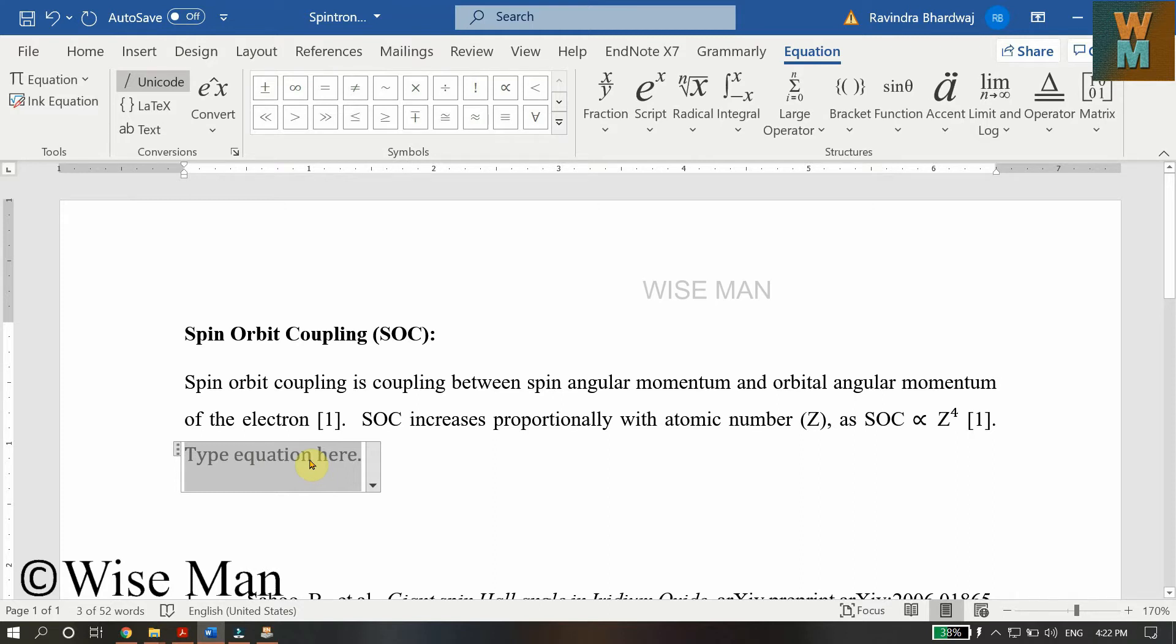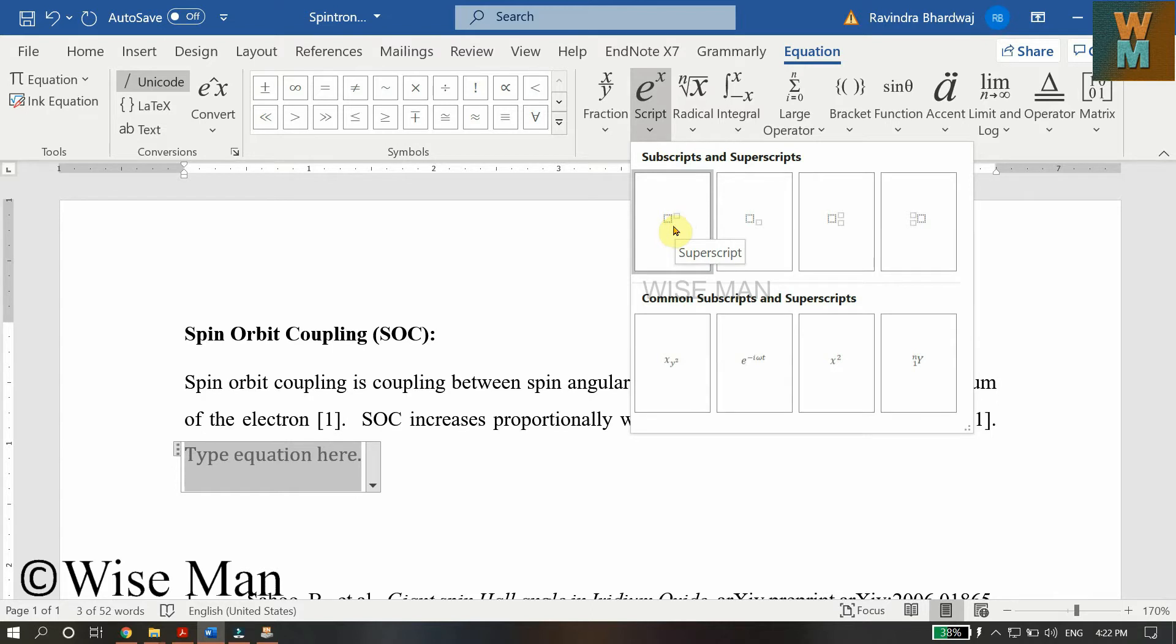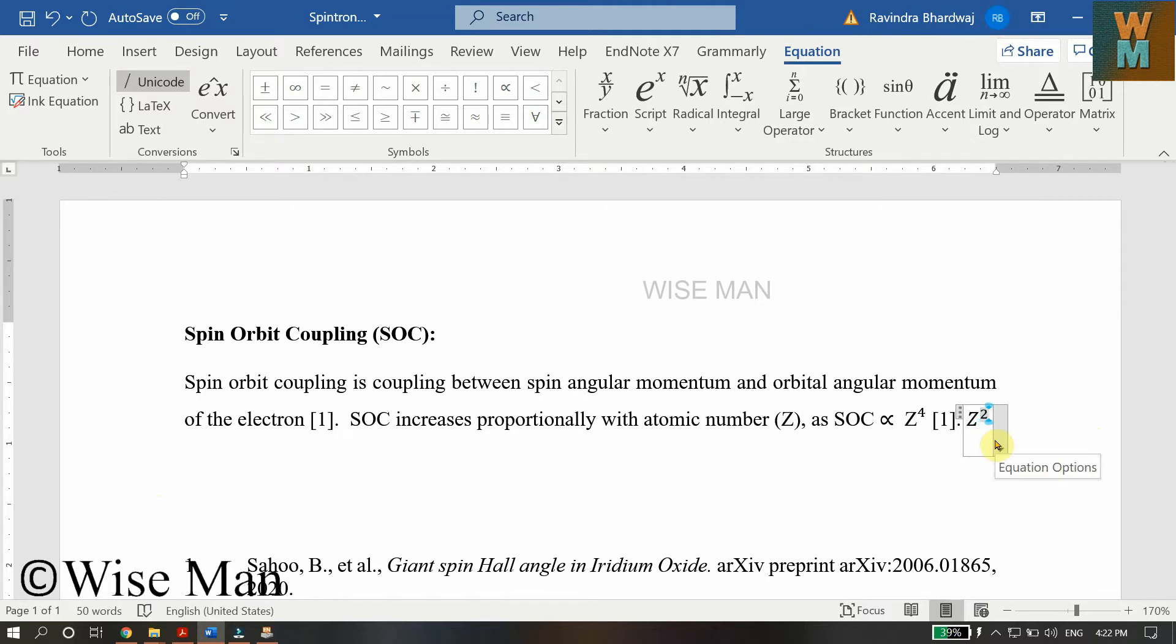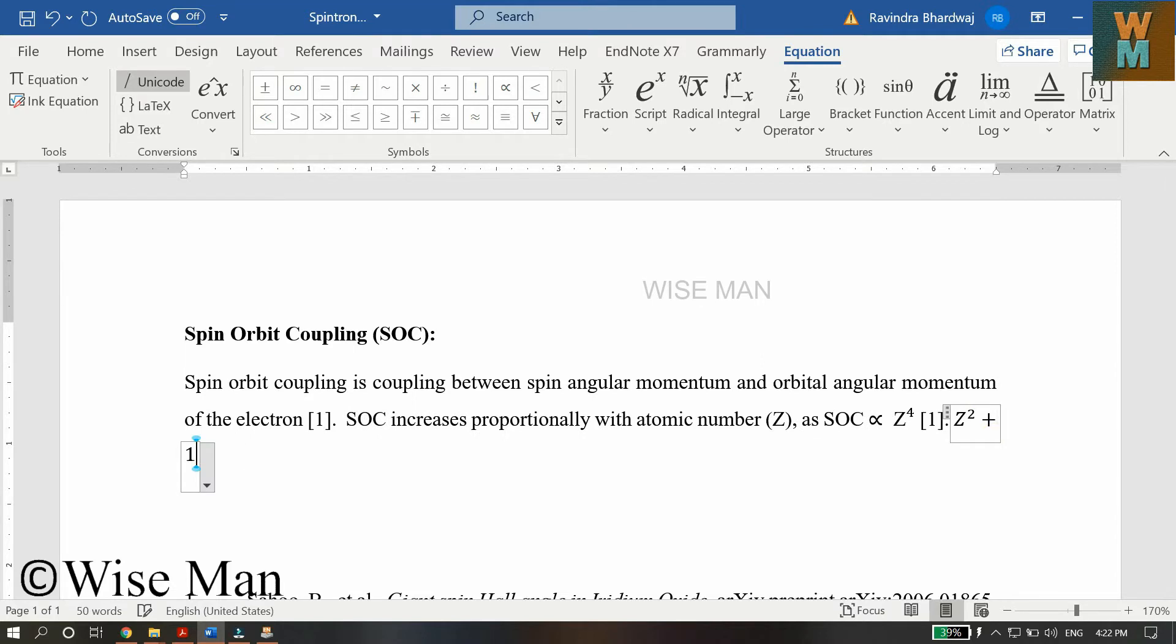Let's say the equation is atomic number Z squared plus something. We can select superscript, then I'll write capital Z raised to square and add plus one.